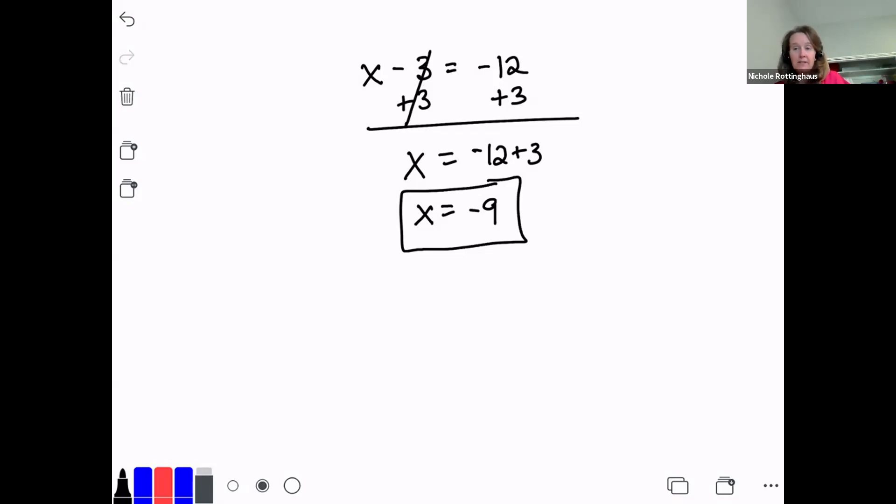How about x minus three equals negative 12. Don't let the negative signs get you confused. Just think about what kind of equation you're solving. It's a subtraction equation. So to solve a subtraction equation, I'm going to add. I'm going to add three to both sides. Negative 12 plus three. They're integers with unlike signs. 12 minus three is nine, and since the 12 was bigger, my answer is negative. Take your time, pay attention to the details. Take it one step at a time.